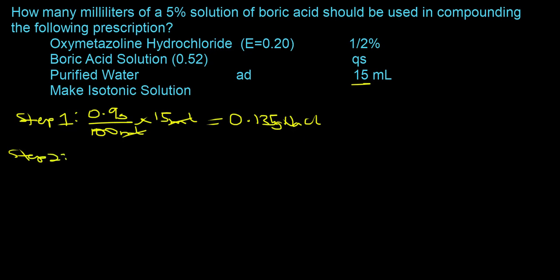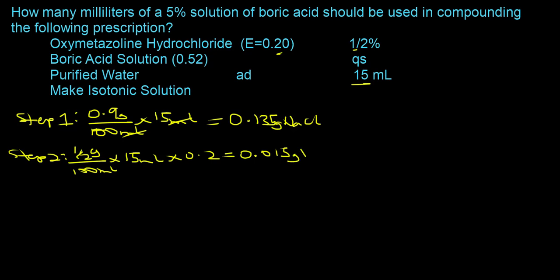In the next step, you determine the amount of sodium chloride that provides the same osmotic pressure as the concentration of the oxymetazoline hydrochloride. You take the half percent — grams in 100 milliliters — times 15 milliliters times the E-value, which is 0.2, and that's going to be equal to 0.015 grams sodium chloride.